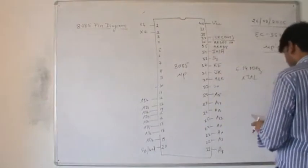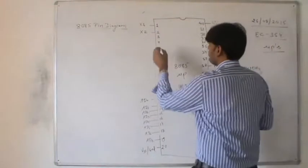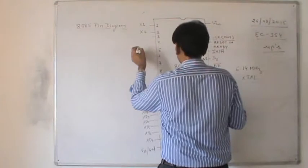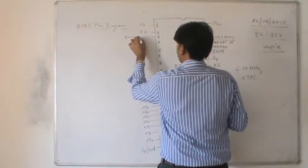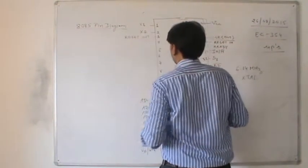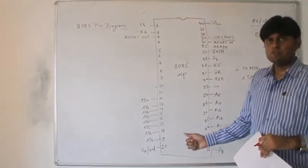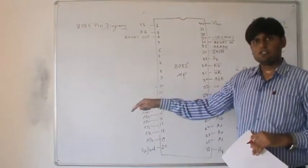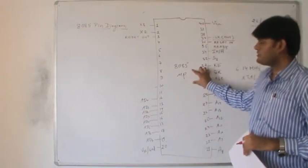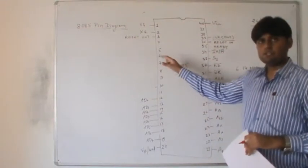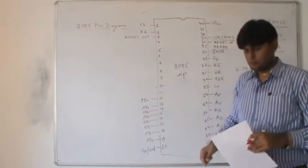The 8085 also has a RESET OUT on pin number 3. This allows the same reset pulse to be sent to other devices connected to the 8085 microprocessor, so they can all be reset together.